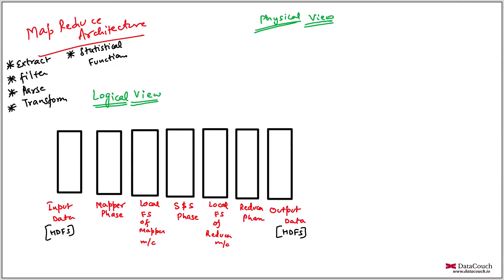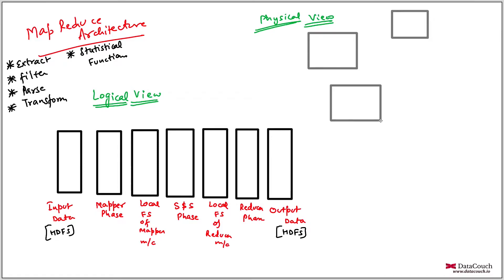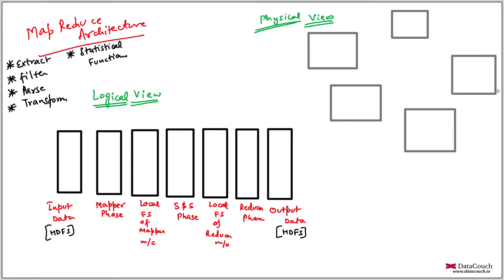Now let's see the physical architecture. In physical architecture we will see there are multiple machines. This is my master machine and we will basically have a lot of worker machines — one worker machine, another worker machine, another worker machine. Let's say we have four worker machines in total.